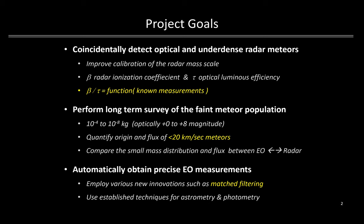The calibration of the radar mass scale has as its biggest unknown the ionization coefficient beta. Using coincidentally collected optical meteors, one could help pin down beta, but there is a caveat: the optical luminous efficiency tau is also not well determined on the optical side. However, the ratio of beta over tau can be determined from strictly measurable quantities.